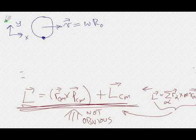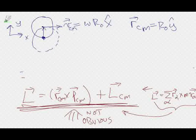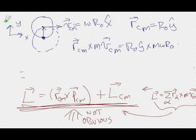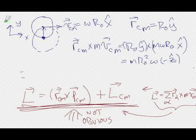Let's go back to the cylinder rotating around its edge. Instantaneously, the center of mass has a velocity v equal to omega r_0. Let's define x and y axes: v_cm is omega r_0 in the x-hat direction. r_cm at this moment is just r_0 ŷ. So r_cm cross m v_cm gives r_0 ŷ cross m omega r_0 x̂, which equals m r_0 squared omega (−ẑ), since ŷ cross x̂ is −ẑ.